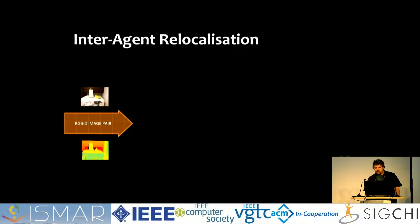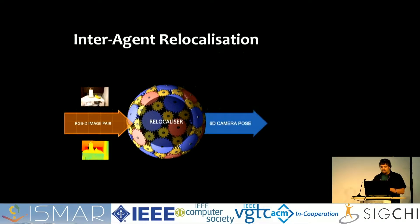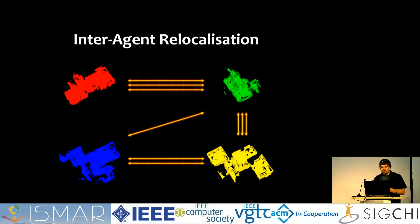First up is the inter-agent re-localization we use to determine the relative poses between the different sub-scenes. As mentioned, as we're reconstructing, the server trains a local re-localizer for each sub-scene. The re-localizer for a sub-scene takes an RGBD image pair, passes them through a process that predicts a lot of different camera pose hypotheses, and then selects one of these hypotheses to return as the output camera pose in that sub-scene's coordinate frame.